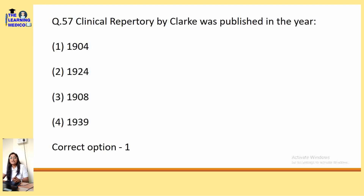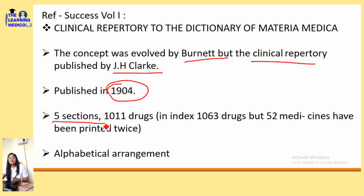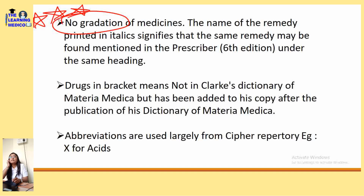Clinical Repertory of Clark was published in the year 1904. The Clinical Repertory to the Dictionary of Materia Medica — the concept was evolved by Bernit — was published by J.H. Clarke in 1904. It used 1011 drugs arranged in alphabetical order with no gradation. The name of a remedy printed in italic signifies the same remedy can be found mentioned in the Prescriber 6th edition. Drug in brackets means not in Clarke's Dictionary of Materia Medica but added after its publication. Abbreviations are used largely from Boenninghausen's Repertory.